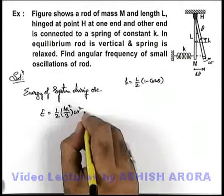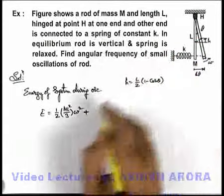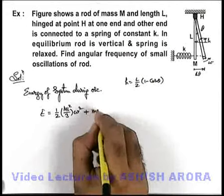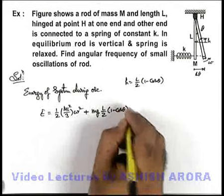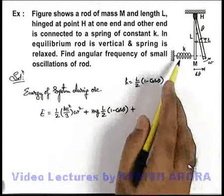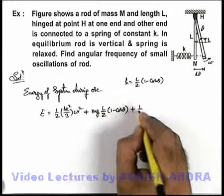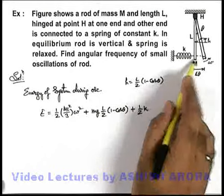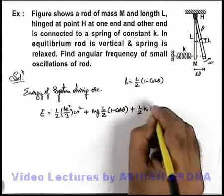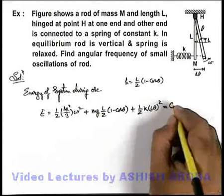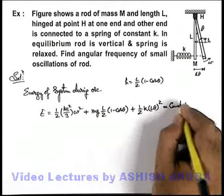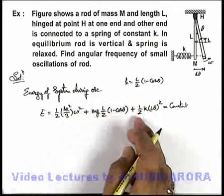Its gravitational energy with respect to mean position can be written as mgh, which is L/2(1 - cos θ), plus the energy stored in the spring which is ½kx², and the extension in the spring is Lθ. This is the total energy of oscillation which is a constant; it does not change with time during oscillation.